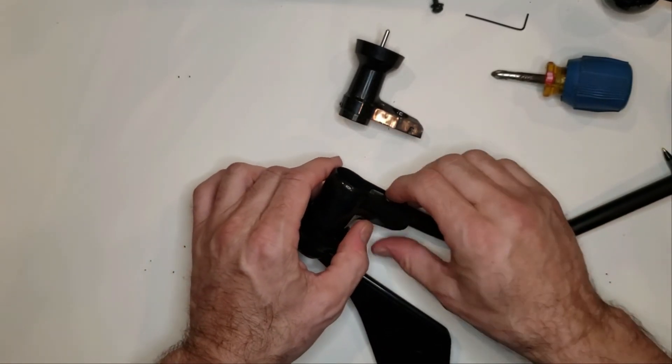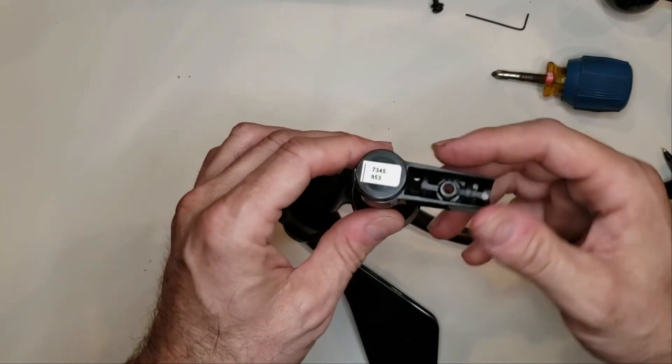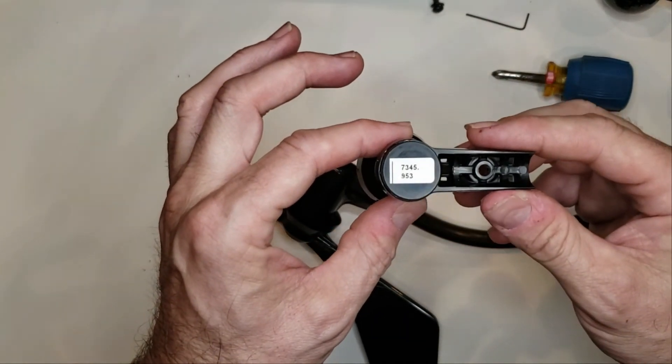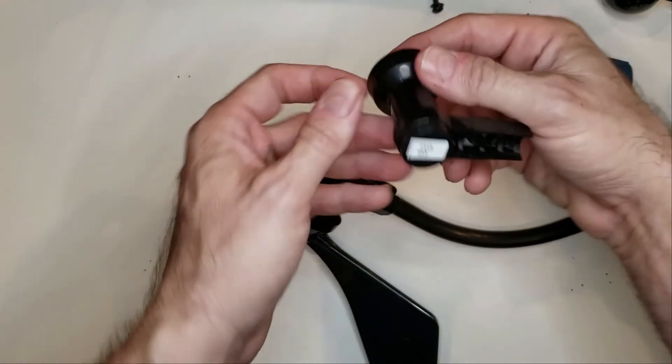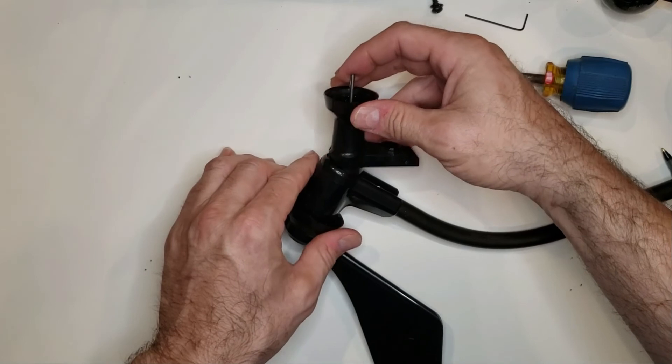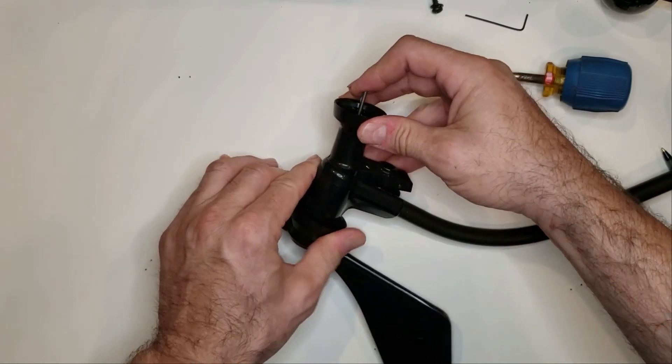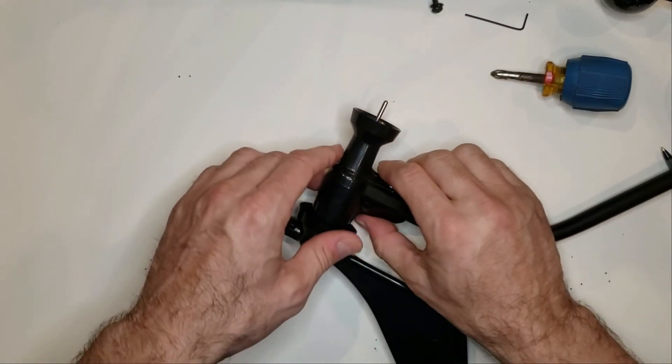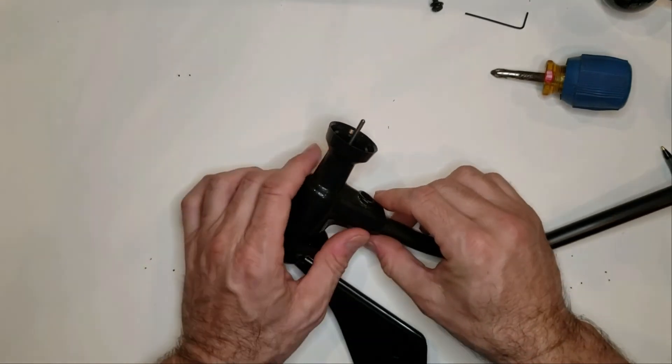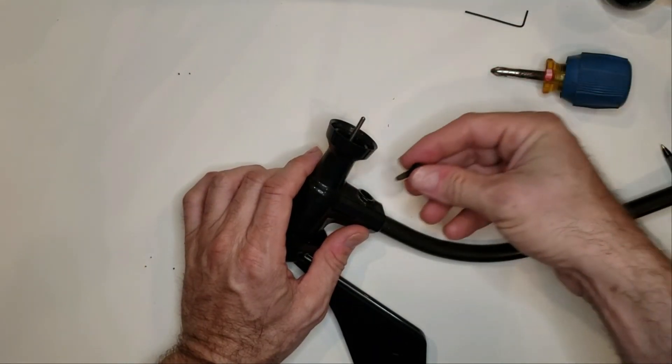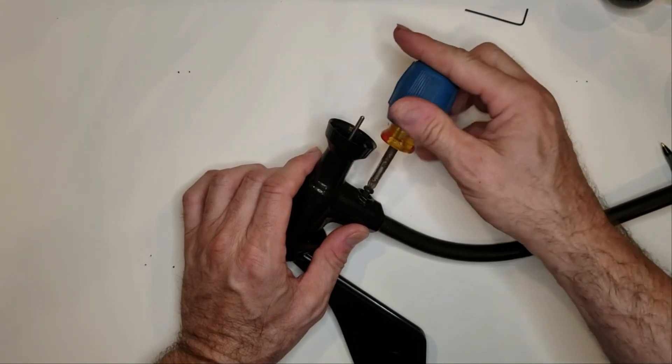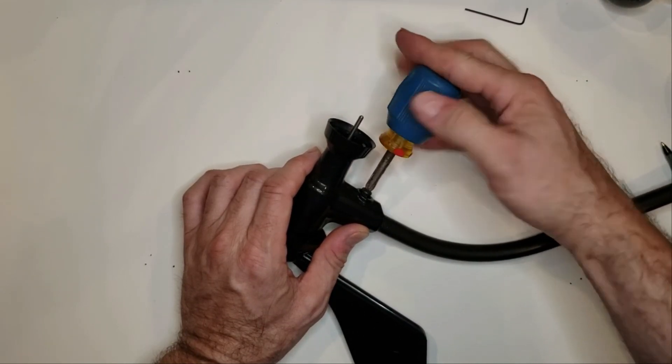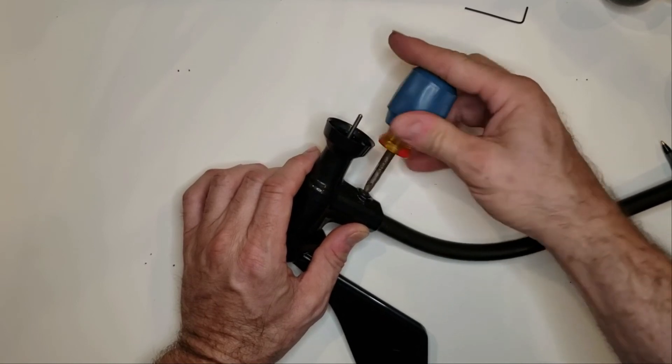So to replace, to install the 7345.953, reverse your procedure. Put this in there like so and snap it into place just like that. And then you're going to want to put your screw back in and screw it back in until it's snug.